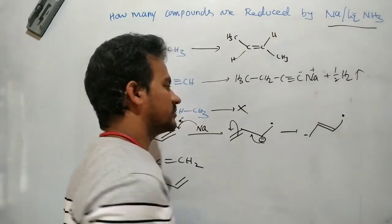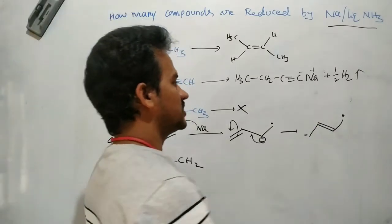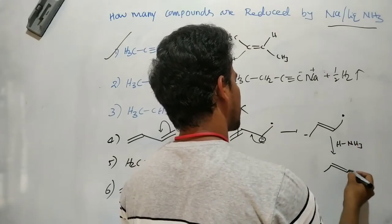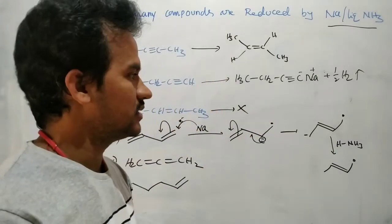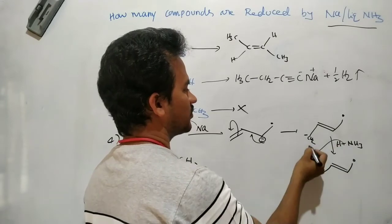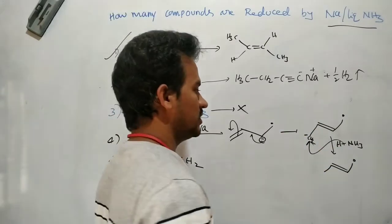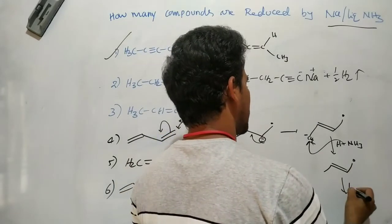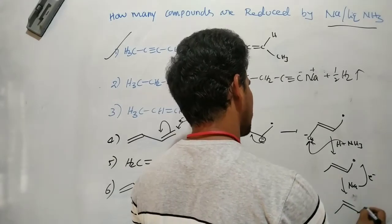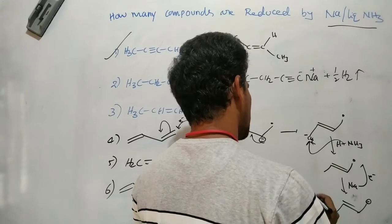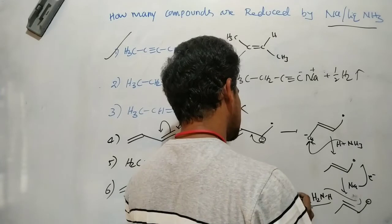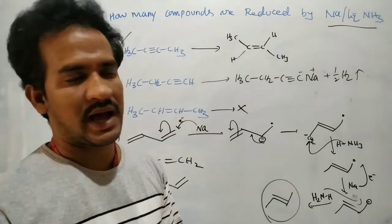The radical anion rearranges immediately to gain stability. The radical here — the CH2 minus — accepts a proton from the liquid ammonia, giving us the radical. Again, this radical gains one more electron and becomes an anion. Once more this anion accepts a proton from ammonia, and as a result it is reduced to trans-2-butene.